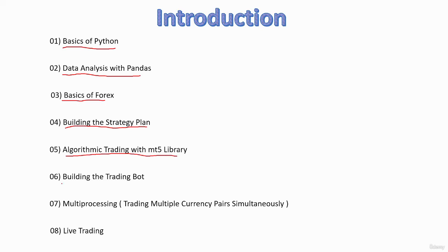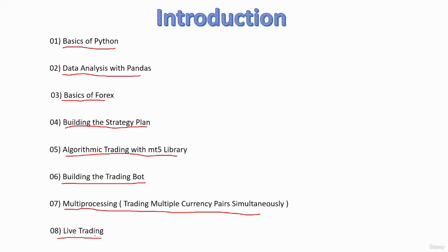In the next section, we are going to build our trading bot by combining our strategy with algorithmic trading. Then in the next section, I will explain how to trade multiple currency pairs simultaneously with multiprocessing. In the final section, we are live trading. Now let us see more details about each section.